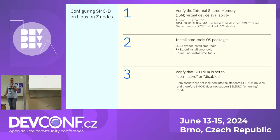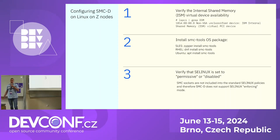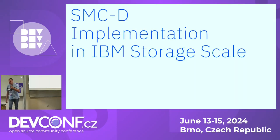Configuring SMC in Linux is straightforward. First, verify ISM device availability using the lspci command, then install the SMC tools package, and disable or set SELinux to permissive mode — the reason being that standard distro policies do not include SMC sockets.